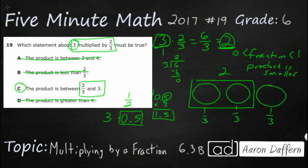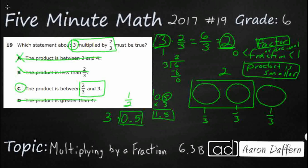So here's the rule we need to remember: if the factor you're multiplying by — whether it's a fraction or a decimal — is between 0 and 1, your product is always going to be smaller. That's how we can solve this problem as answer C without even doing the work, because we know the two factors are 3 and 2 thirds, so the product is going to be between those two.